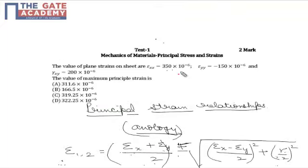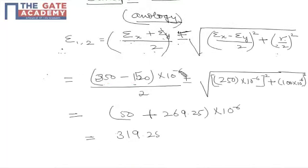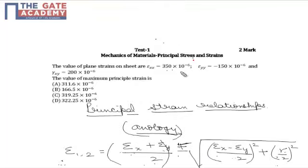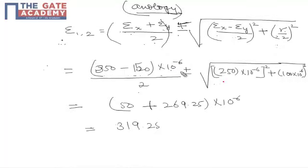Note that epsilon yy is given as -150 × 10^-6. Substituting the values: (350 - 150) × 10^-6 by 2, and under the square root, (epsilon x minus epsilon y) by 2 equals (350 plus 150) by 2, which is 250 × 10^-6, squared.